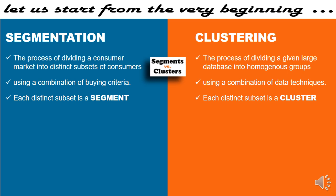On the other hand, clustering is a mathematical process of dividing a large database into homogeneous groups where the behavior is identical within a group and heterogeneous across groups. This is done using a combination of data techniques like partitioning or hierarchification. Each distinct subset that emerges is called a cluster.